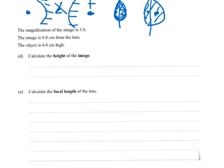The magnification of the image is 3.0. The image is 6.0 cm from the lens. The object is 4.0 cm high. Calculate the height of the image. What have we got? Well, what I always do when I'm approaching a mathematical question, I'll write down what I've got in the symbols that I know.